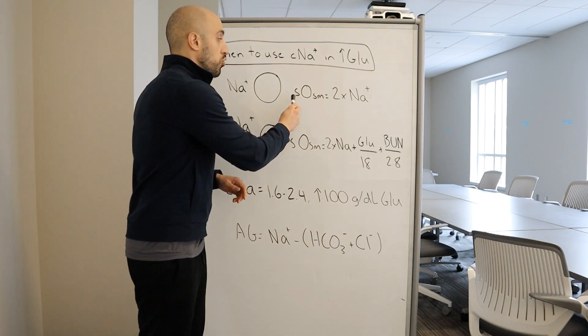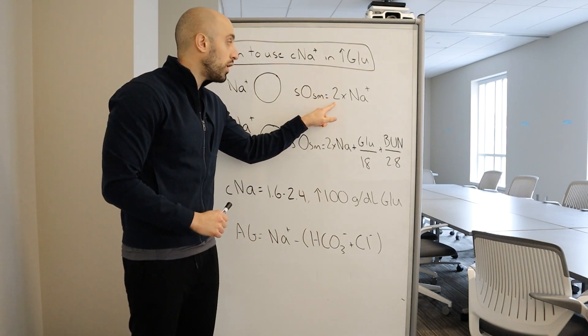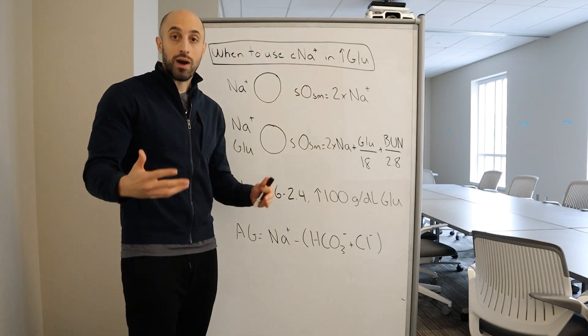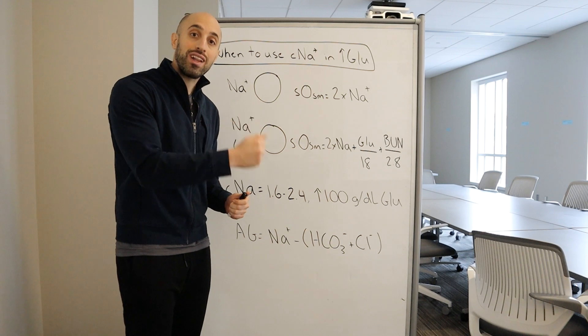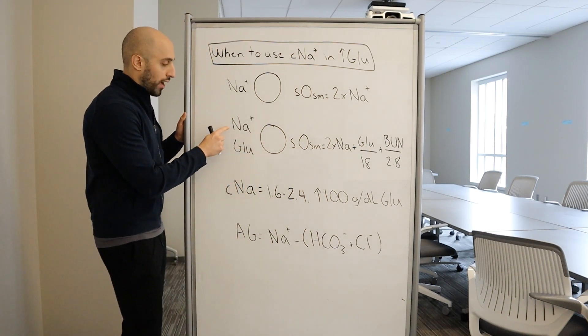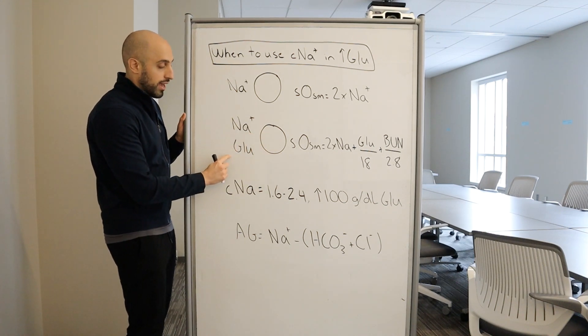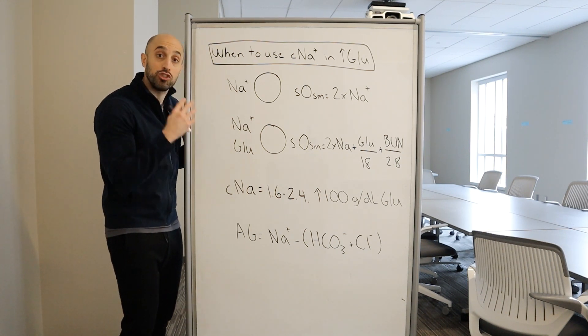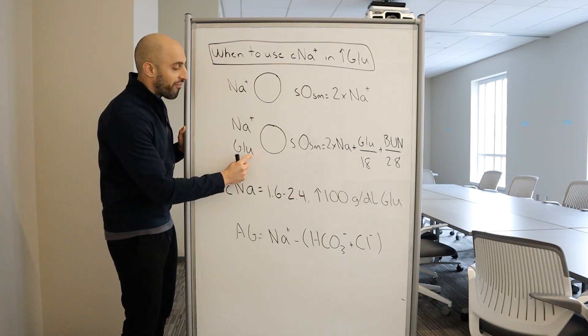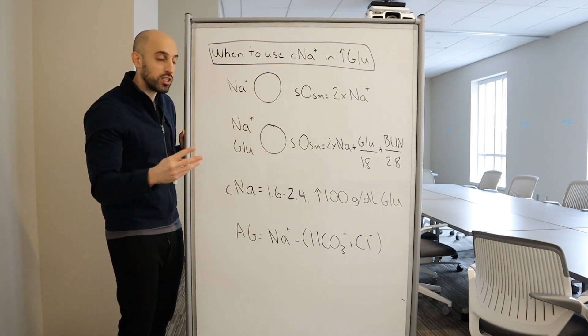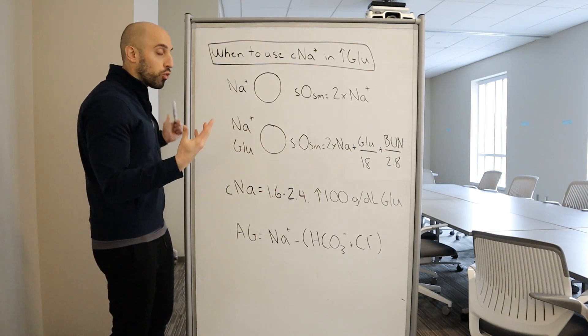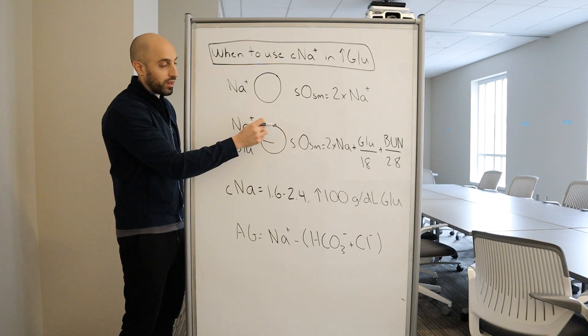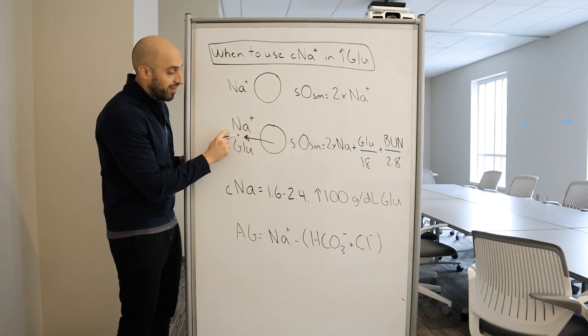So under normal circumstances, you can estimate the serum osmolality by taking two and multiplying it by sodium. So what happens in the setting of increased glucose, which might occur in a patient with diabetes who has relative insulin deficiency? So you have sodium and glucose that are extracellular, and because this patient doesn't have insulin, all of a sudden, glucose becomes a particle and contributes to the overall osmolality. So we've effectively increased the osmolality or the concentration of the extracellular fluid. So which way does water travel? Water travels in this direction. And what happens when water leaves from the intracellular component to the extracellular component? This sodium gets diluted.